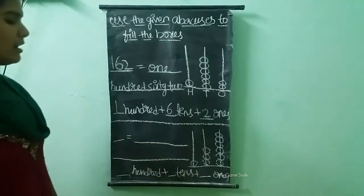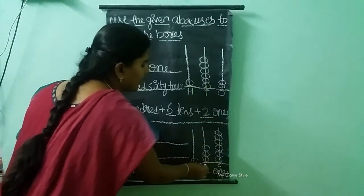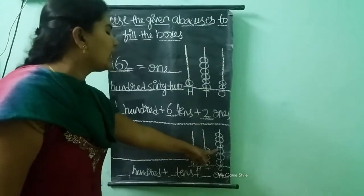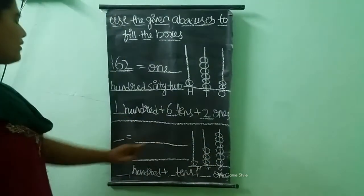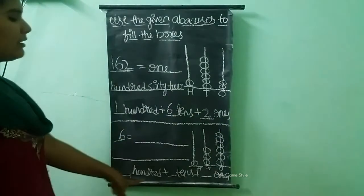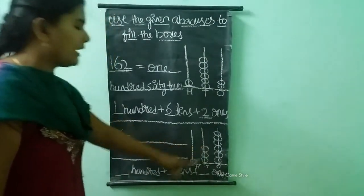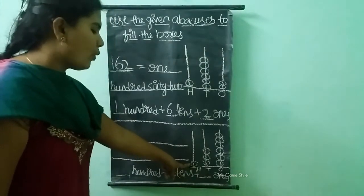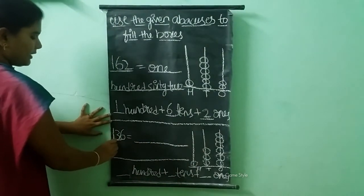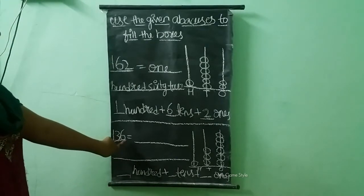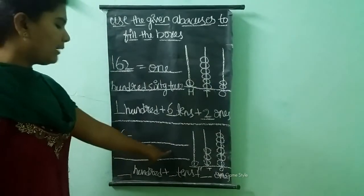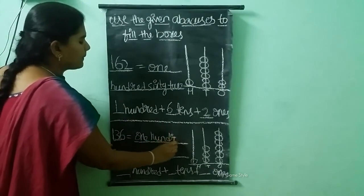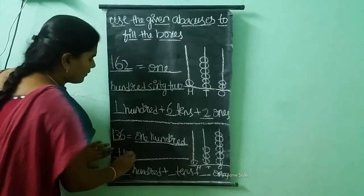Now let's see the next example. See this abacus, children. Here in ones place — this is ones place, tens place, hundreds place. In ones place, how many beads are there? Six beads are there, so in ones place we write six. In tens place, how many beads are there? Three beads are there, so in tens place we write three. One hundred and thirty-six.